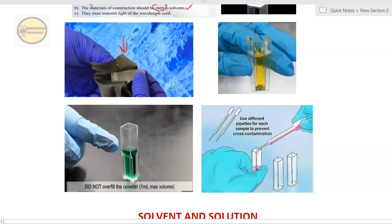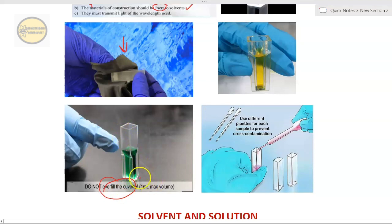Here you can see how I'm cleaning the cuvette. Rather than tissue or filter paper, it is better to use a cloth of this kind — we often see this kind of cloth when we use spectacles. That cloth is much better to clean the cuvette. Here you can see I've put the sample in my cuvette and I haven't overfilled it — don't overfill your cuvette. I've taken one milliliter maximum volume. Also, use different pipettes for each sample to avoid any kind of cross-contamination.